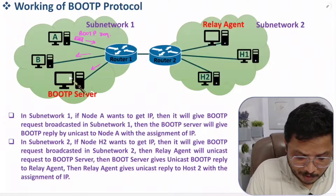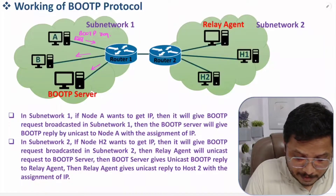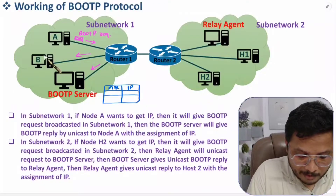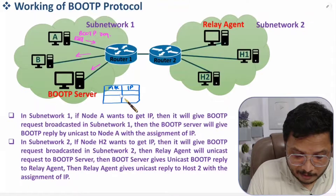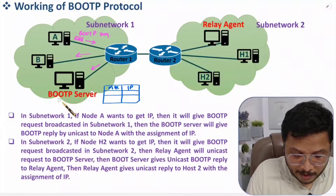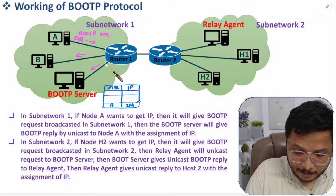The BOOTP server will give a reply assigning an IP address to Node A. The BOOTP server has a table in memory containing MAC addresses and their corresponding IP addresses. Since Node A is newly added, the BOOTP server will add Node A's MAC address and assign an IP to it.